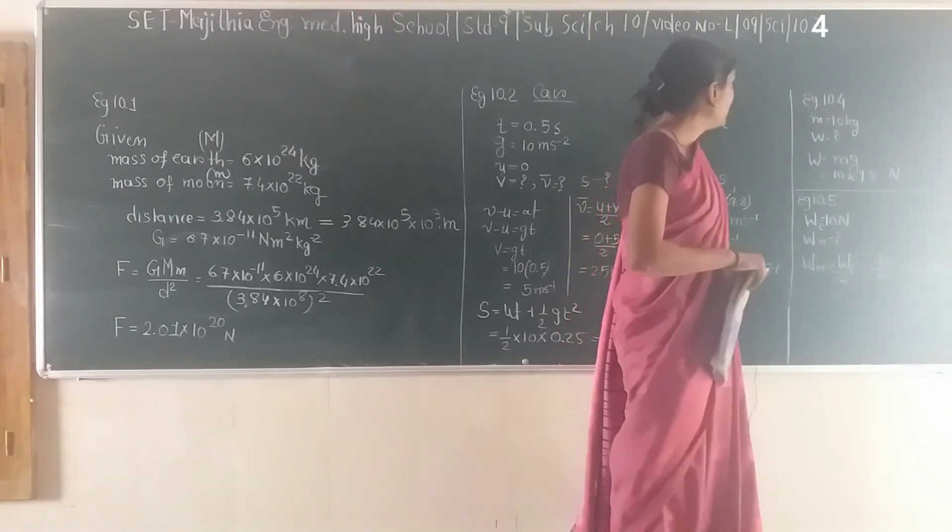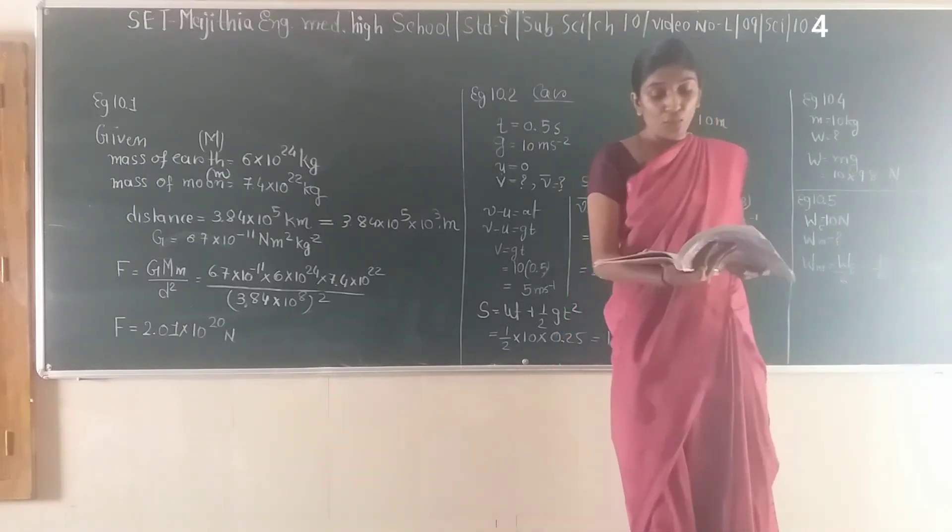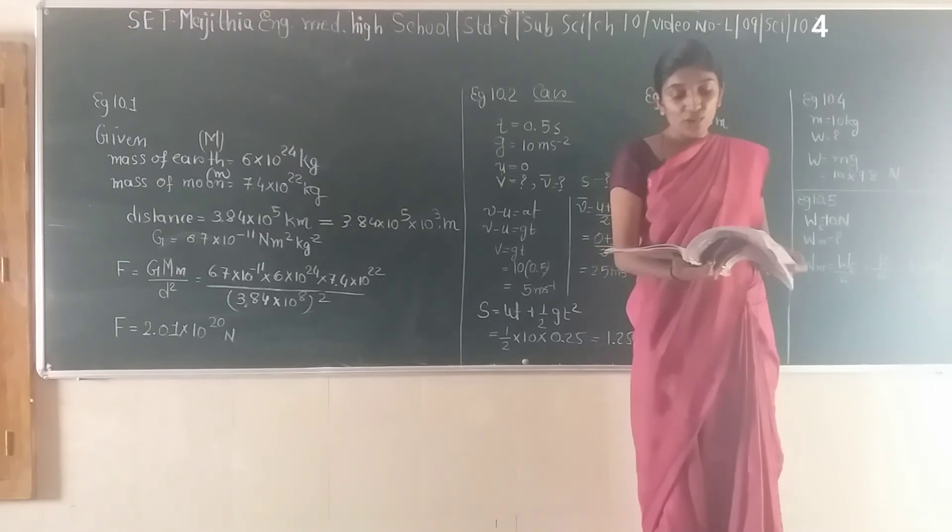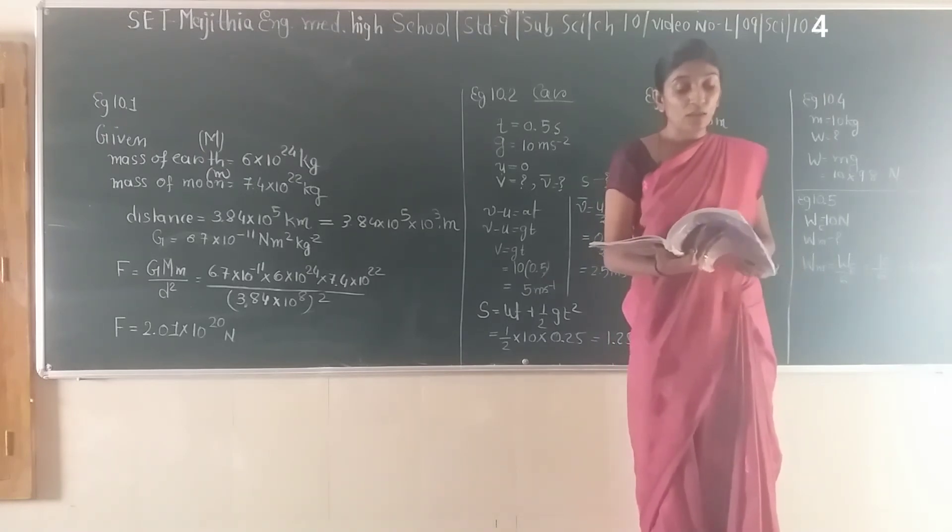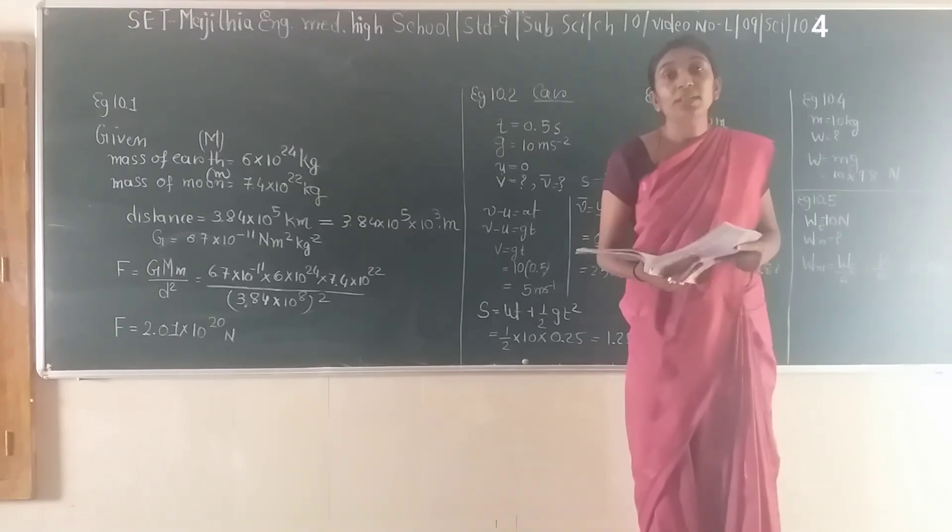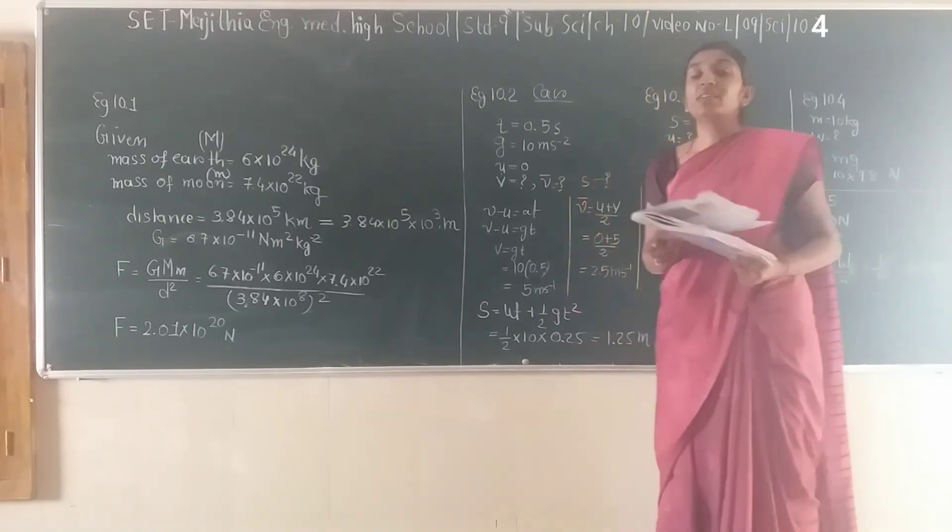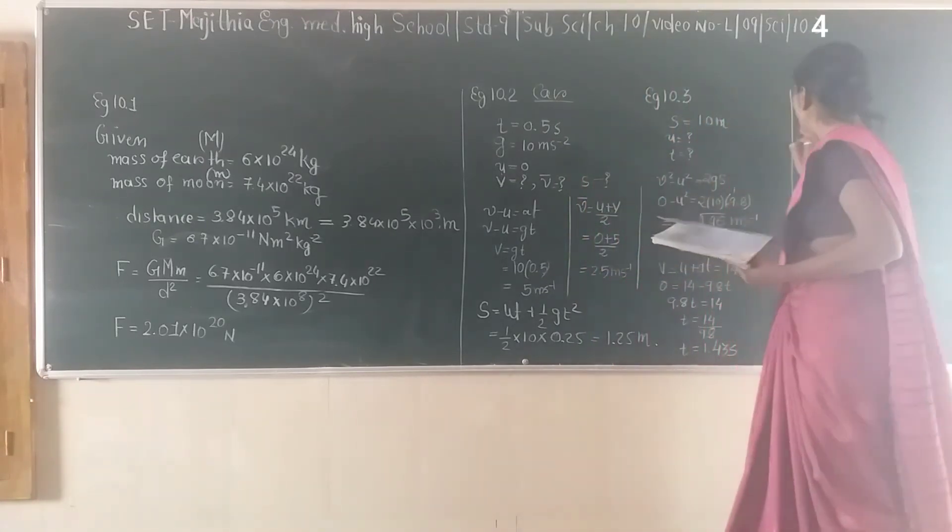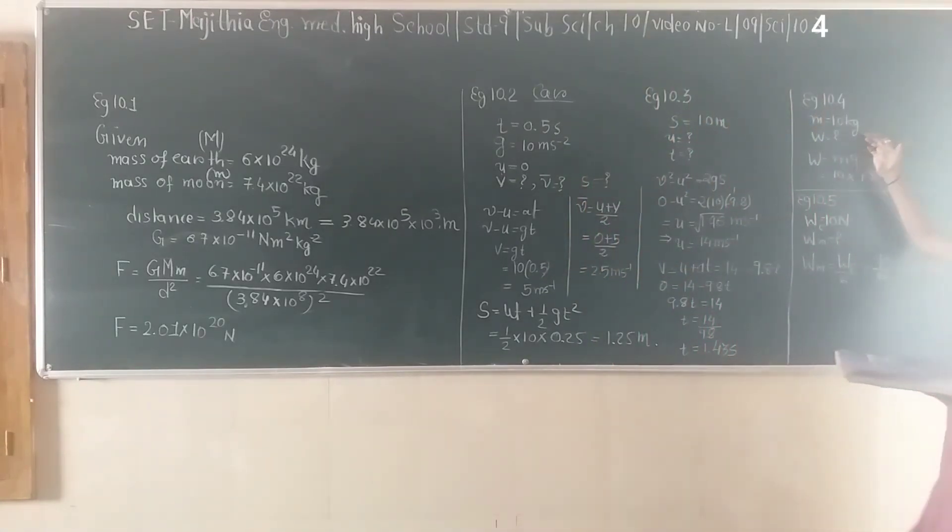Next is example number 10.4 on page 138. The mass of an object is 10 kg. What is its weight on Earth? You know the mass, so weight is mass multiplied by gravitational acceleration: 10 × 9.8. That would be our answer, which is 98 Newtons.